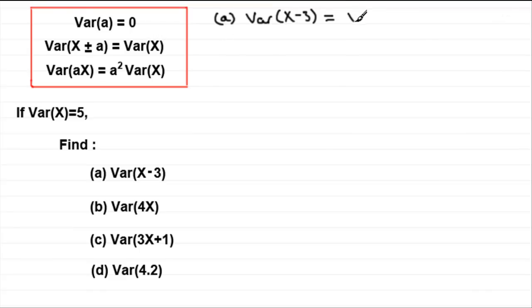So, in other words, this equals variance of X. And what is the variance of X? Well, it's 5. So, our answer then is clearly 5.